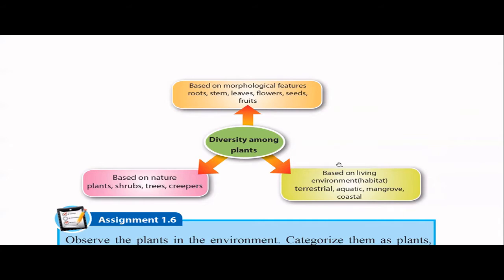Next, we can categorize plants based on their living environment, which we call habitat. Terrestrial means plants on the land — for example, jackfruit trees, mango trees, and others. In house gardens and school gardens, you can mostly see a terrestrial environment, and within that, you can see different types of root systems and different plant behaviors.